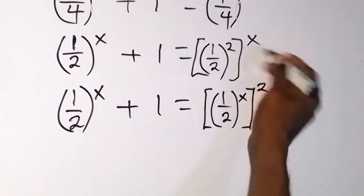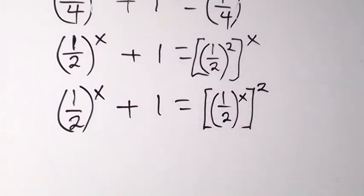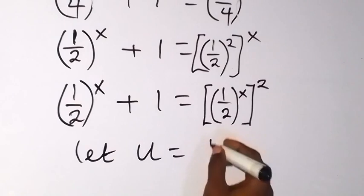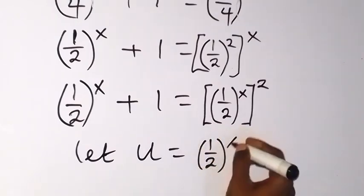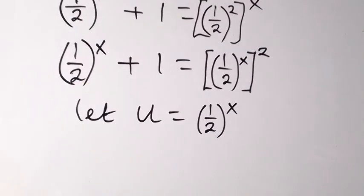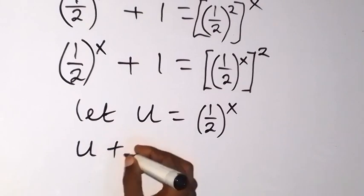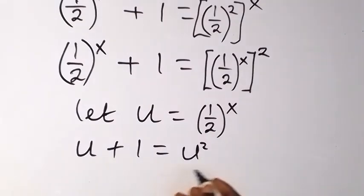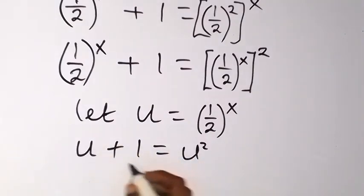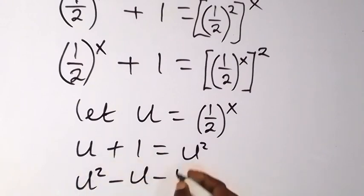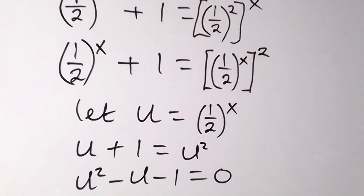We have just switched the power x as the multiplier. From there we can say: let u be equal to 1 over 2 raised to power x. This equation then becomes u plus 1 equals u squared. We use this to form a quadratic equation — taking everything to one side, we have u squared minus u minus 1 equals 0.